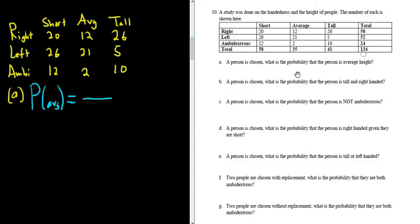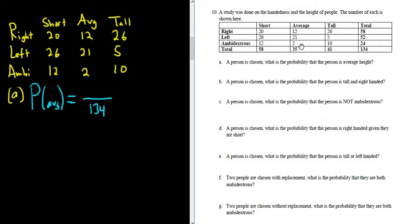They give us the total, so 134 ways to pick a person. And the number of ways to pick a person that is average — that's 35. You could also add 12 plus 21 plus 2, which gives you 35. So 35 over 134.